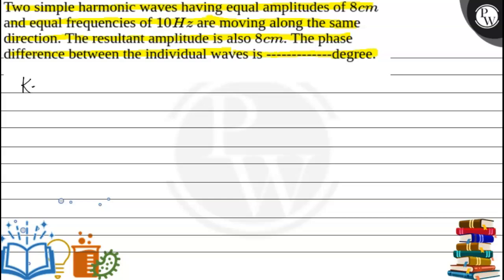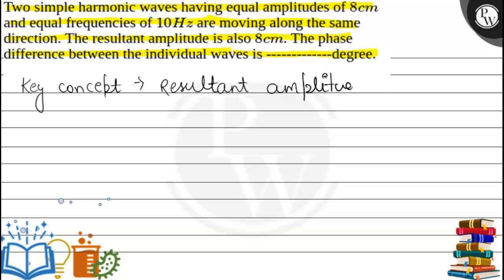The key concept of this question is the formula of resultant amplitude: A² = A1² + A2² + 2·A1·A2·cos(φ), where A is the resultant amplitude.